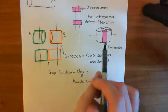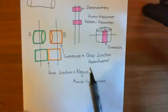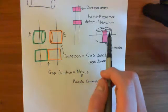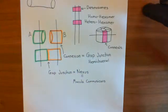A connexon itself is made up of a hexamer of connexin proteins, and there is not just one connexin protein, there are many connexin proteins. Either you can use the same connexin protein in all six slots of your connexon to make a homohexamer, or you can use different connexins to make a heterohexamer.